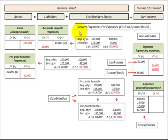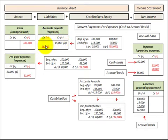For accrual basis accounting, here is how our accounts payable works: we credit or increase our accounts payable for any expenses incurred but not yet paid for, or for expense items purchased on credit. Then once we make payments for those expense items, we debit or decrease our accounts payable and credit or decrease our cash account for those payments.